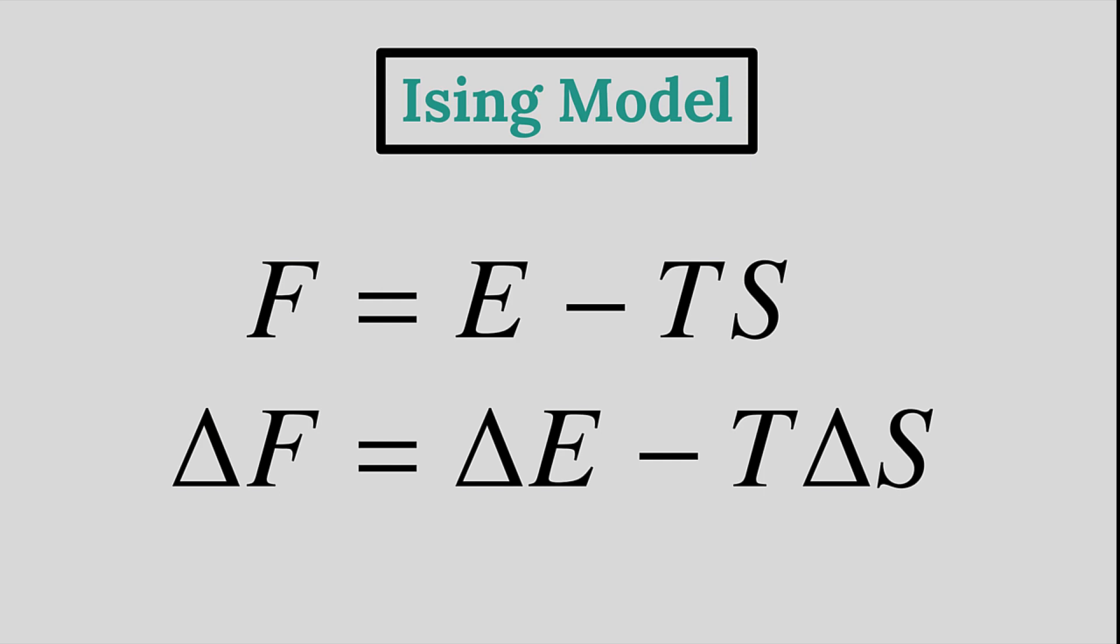Bear with me. We need to introduce one more thermodynamic variable. The Helmholtz free energy, F, of the system is defined as the energy minus the temperature times the entropy. If we hold T constant, then the change in F can be written like this.